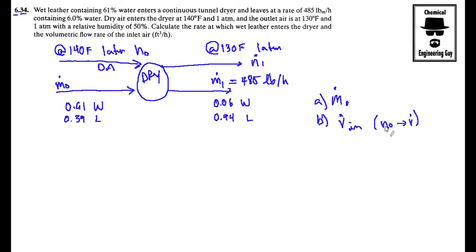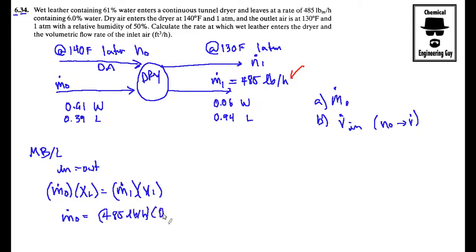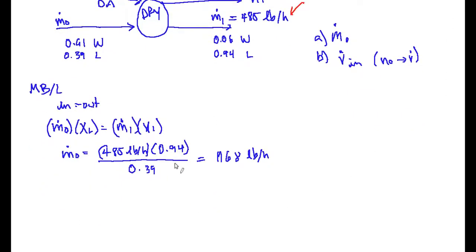Let's start with a mass balance of leather. The inlet and outlet are not reacting, so m0 times fraction of leather equals m1 times the fraction of leather here. I use this as a basis, so m0 would be 485 pounds per hour times the mole fraction of leather here divided by the mole fraction at the beginning. This should give you something around 1,168 pounds per hour. So we got our inlet, this is letter a.